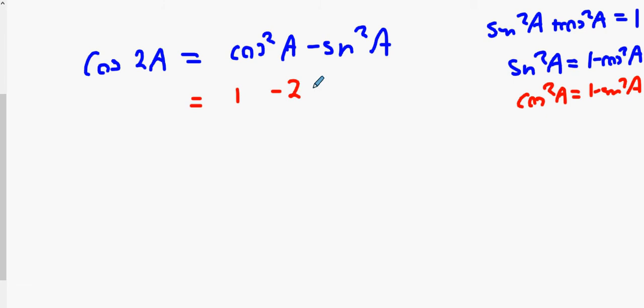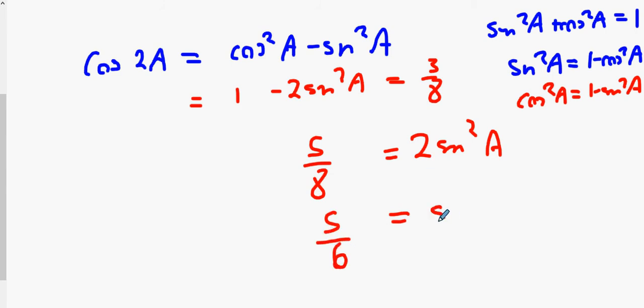Eliminate sin squared A. So instead of eliminating cos squared A, eliminate sin. What would you get this time? 1 minus sin²A equals 3/8. 2sin²A equals 1 take away 3/8, divide by 2. Square root top and bottom, root 5 over 4. That's what we got earlier, same answer. Doesn't matter which way you do it.